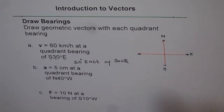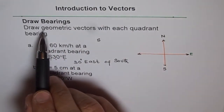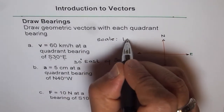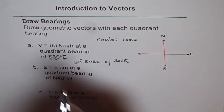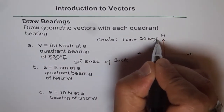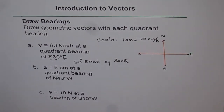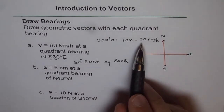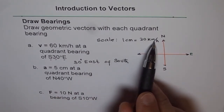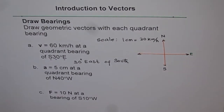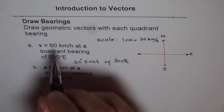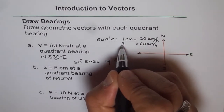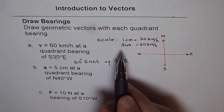Let me first define the scale. Whenever you are drawing geometric vectors, you need to define your scale. Let's say the scale is 1 centimeter equals 20 kilometers per hour. So what we will do is represent an arrowhead whose length will be — since 20 km/h is 1 cm, 60 km/h is going to be 3 centimeters. So the length of our arrow is going to be 3 centimeters.